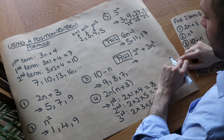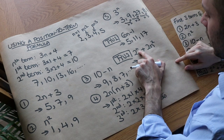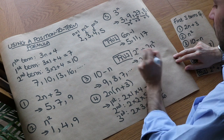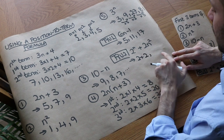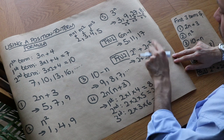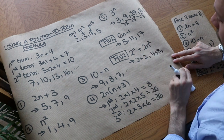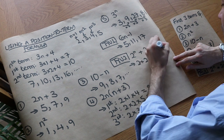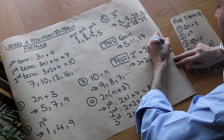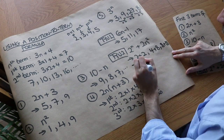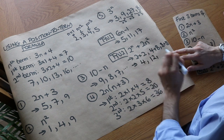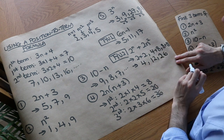Now the harder one: 2 to the n plus 2n squared. The first term: 2 to the power of 1 is 2, plus 2 times 1 squared is 2 — so 2 plus 2 equals 4. The second term: 2 to the power of 2 is 4, plus 2 times 2 squared is 2 times 4 equals 8 — so 4 plus 8 equals 12. The third term: 2 to the power of 3 is 8, plus 2 times 3 squared is 2 times 9 equals 18 — so 8 plus 18 equals 26. Well done if you got those right.